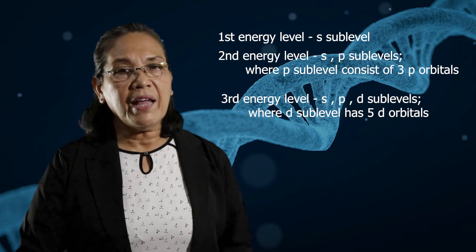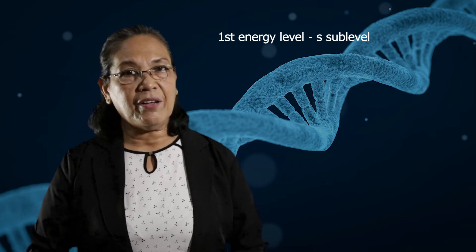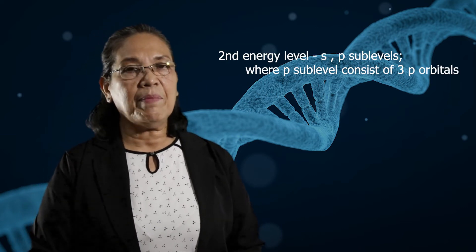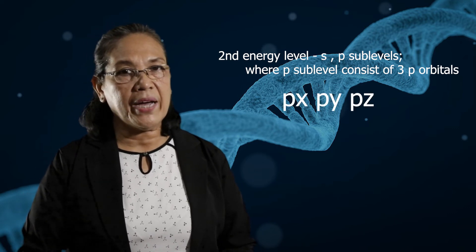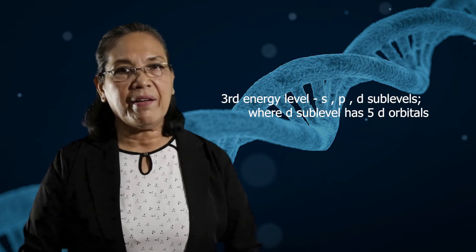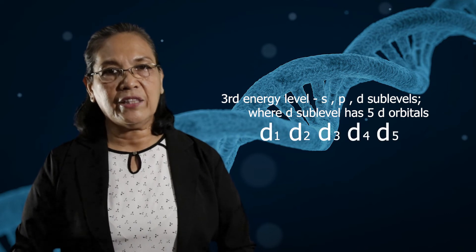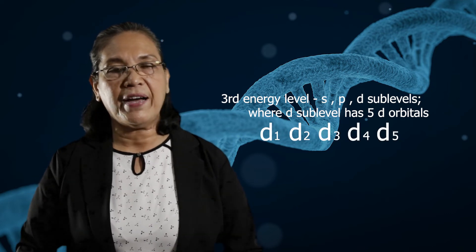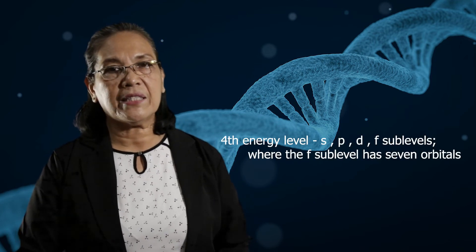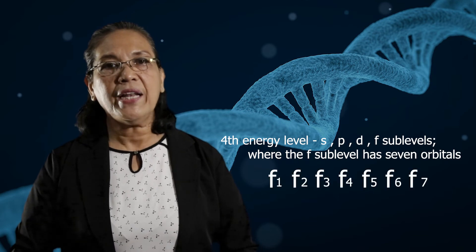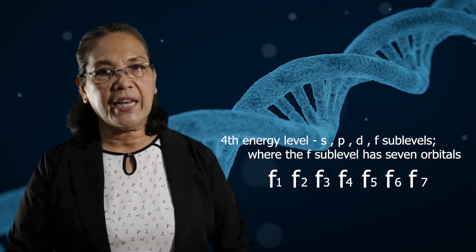Each sub-level has orbitals. For the S sub-level, there is only 1 orbital. The P sub-level has 3 orbitals: Px, Py, and Pz. The D sub-level has 5 orbitals: D1, D2, D3, D4, and D5. And the F sub-level has 7 orbitals: F1, F2, F3, F4, F5, F6, and F7.